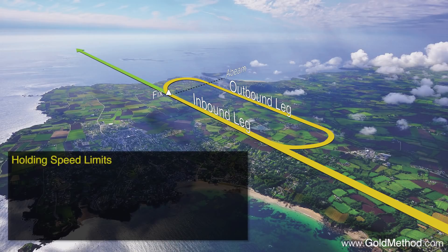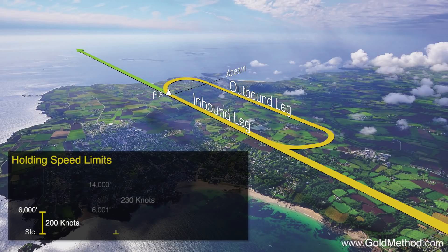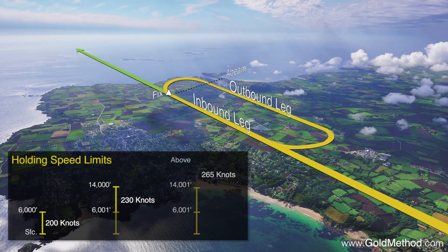There are also speed limits to consider. From the surface up to 6000 feet, you may not go faster than 200 knots in a hold. From 6,001 to 14,000 feet, the speed limit is 230 knots. And from 14,001 and above, you may not go faster than 265 knots.